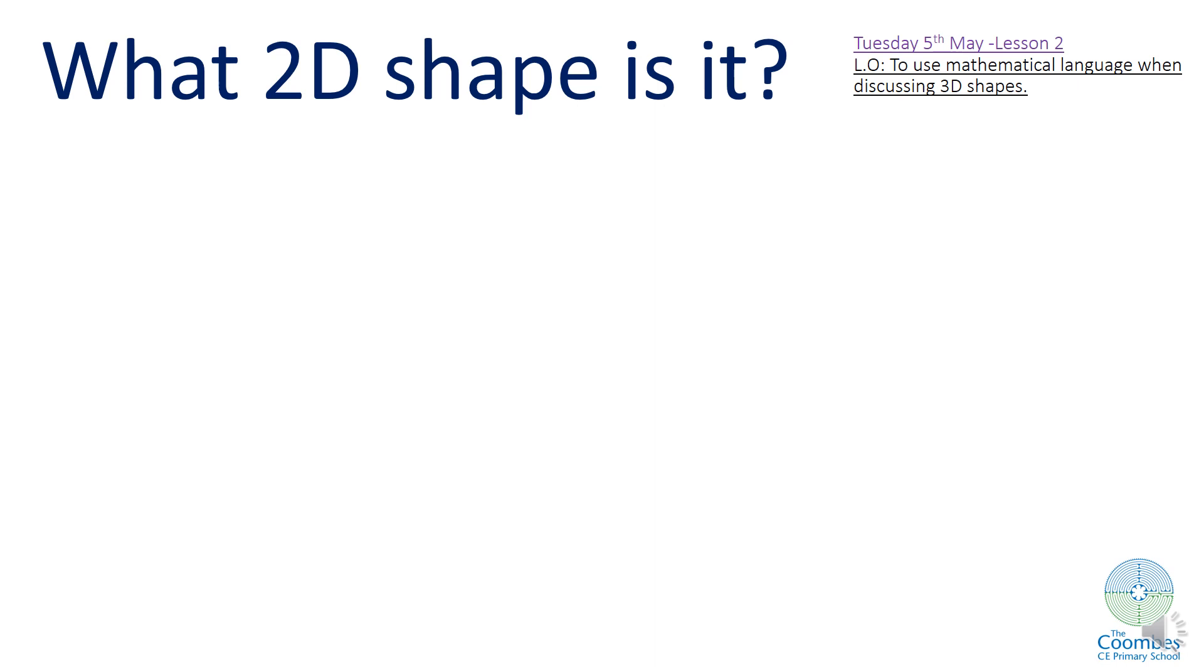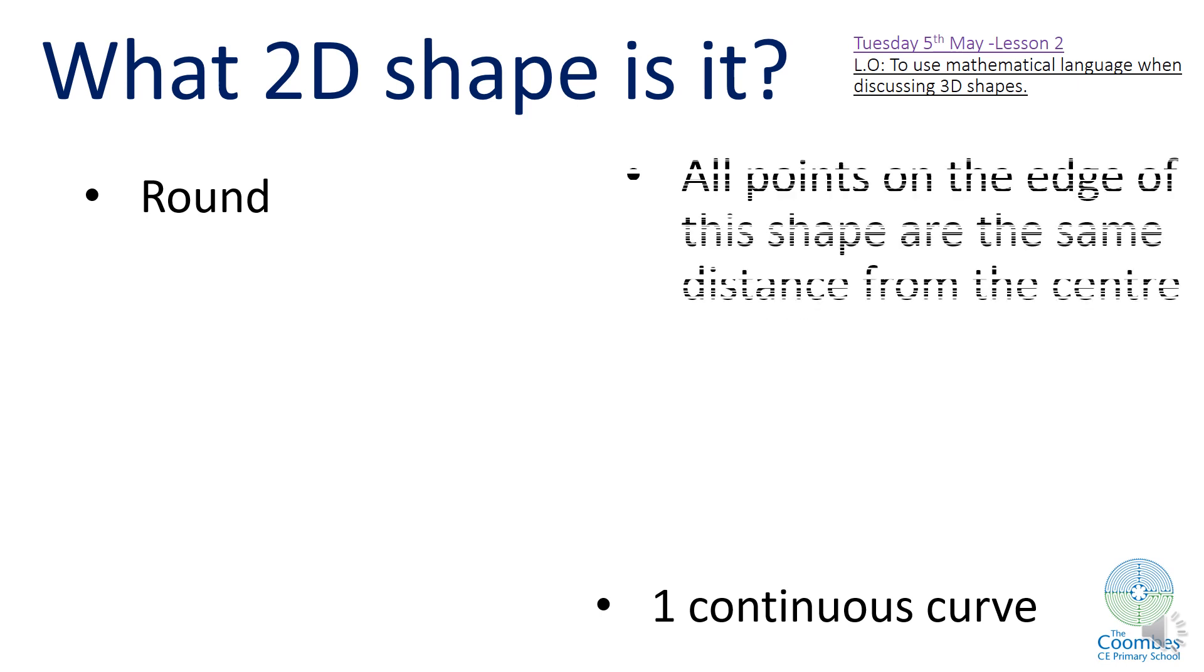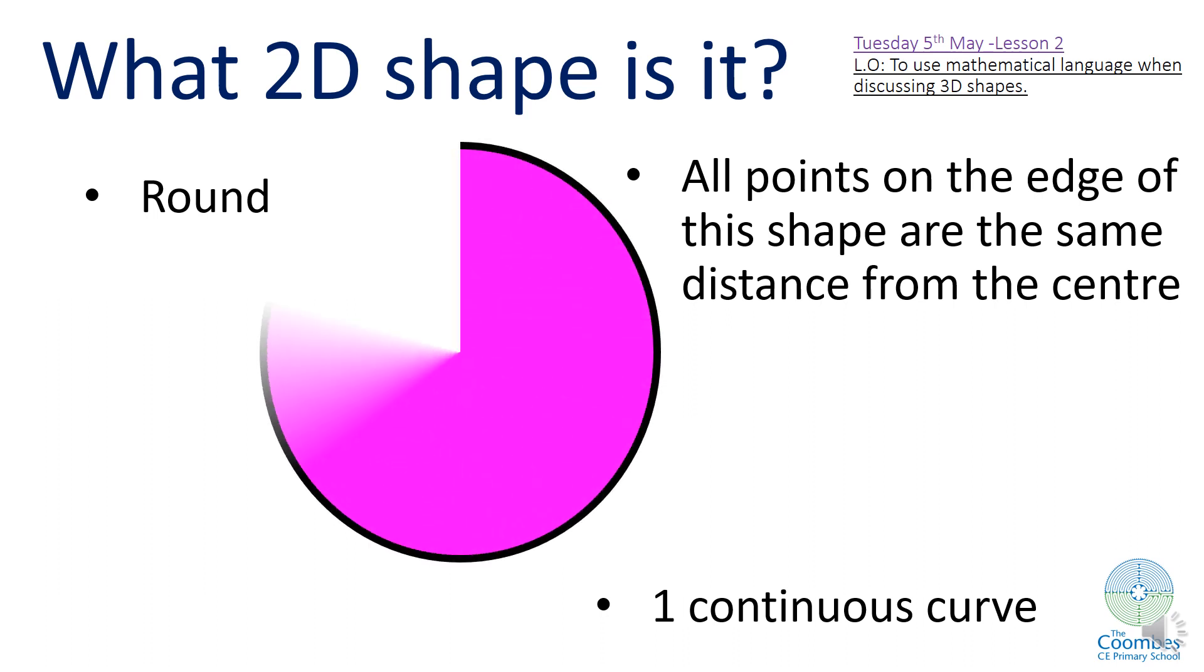Moving on to the next 2D shape. Can you guess what it is? This 2D shape is round. It has one continuous curve, so it's one side that is a continuous curve. And all points on the edge of this shape are the same distance from the centre. Can you guess what shape it is? Brilliant, it is a circle.